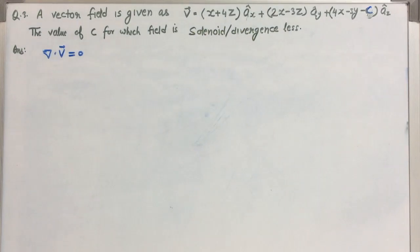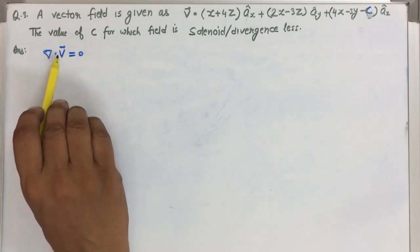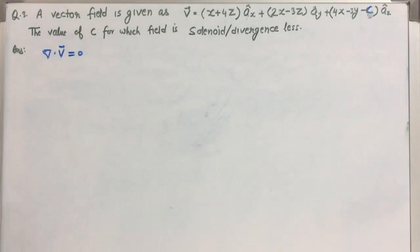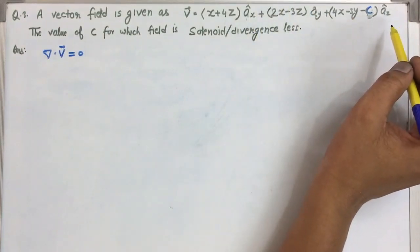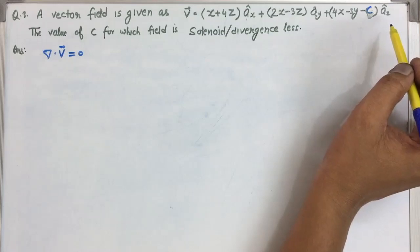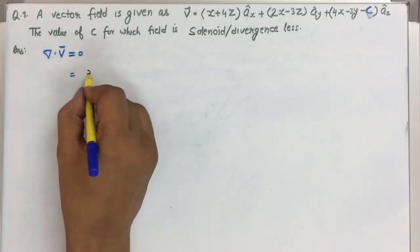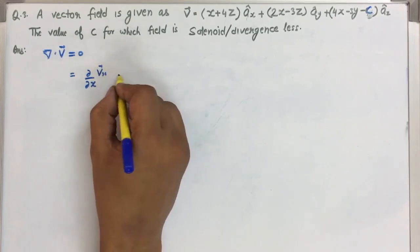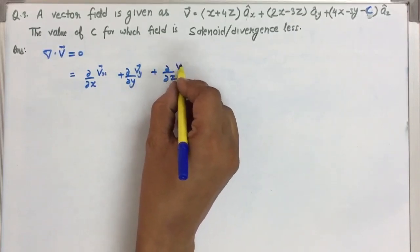So let us start. The first thing to decide is that divergence should be del dot V, and since it is divergence-less, it should equal 0. The coordinate system is confirmed as the rectangular coordinate system. In rectangular coordinates, the divergence can be written as del over del x of V_x, plus del over del y of V_y, plus del over del z of V_z.